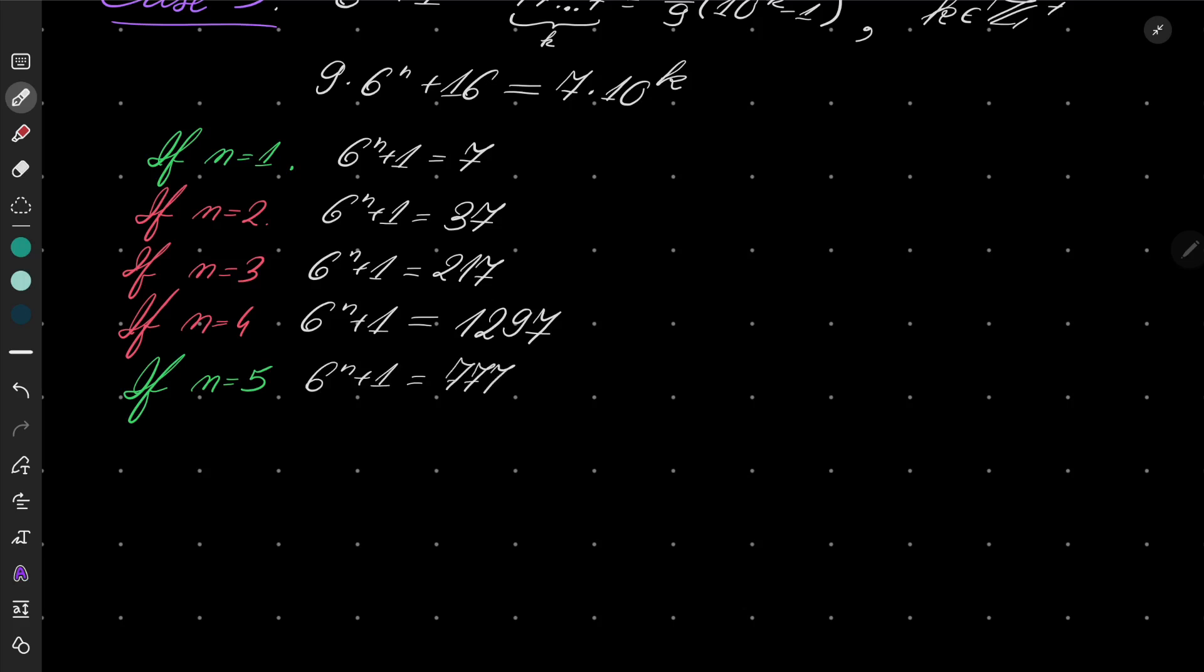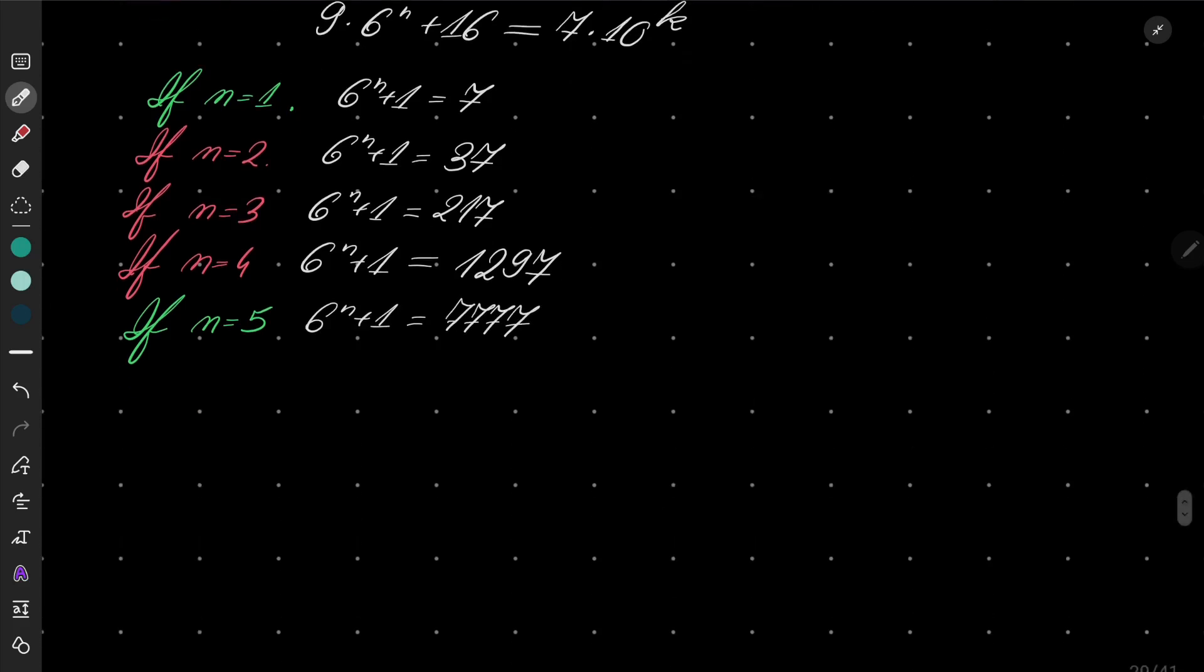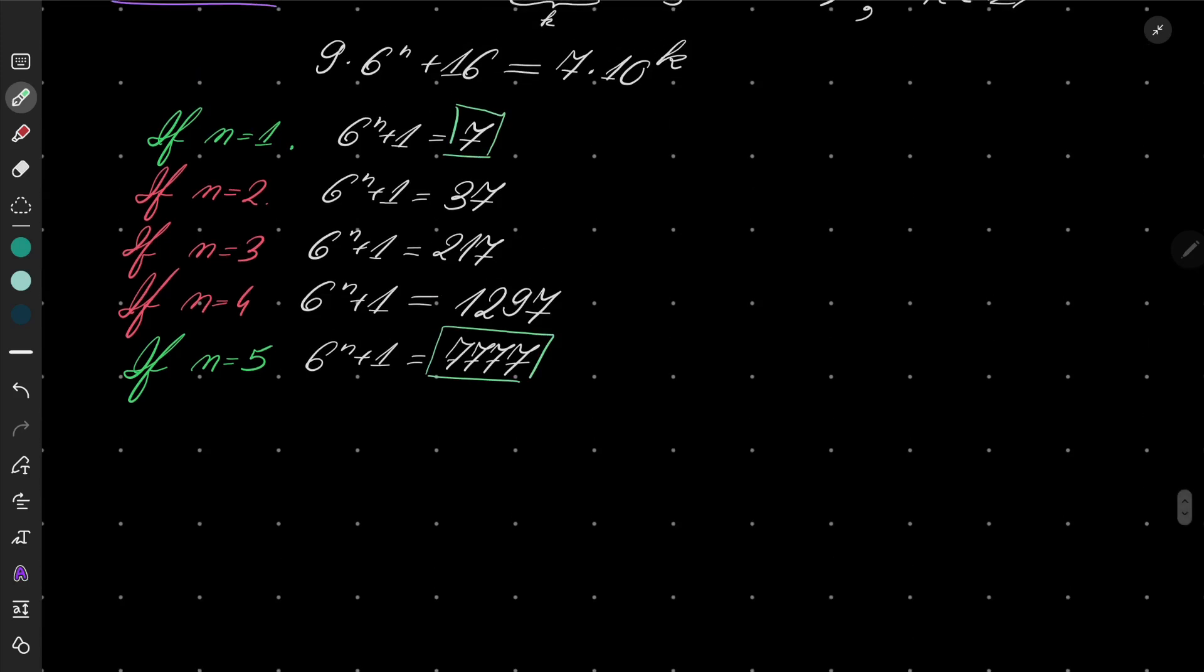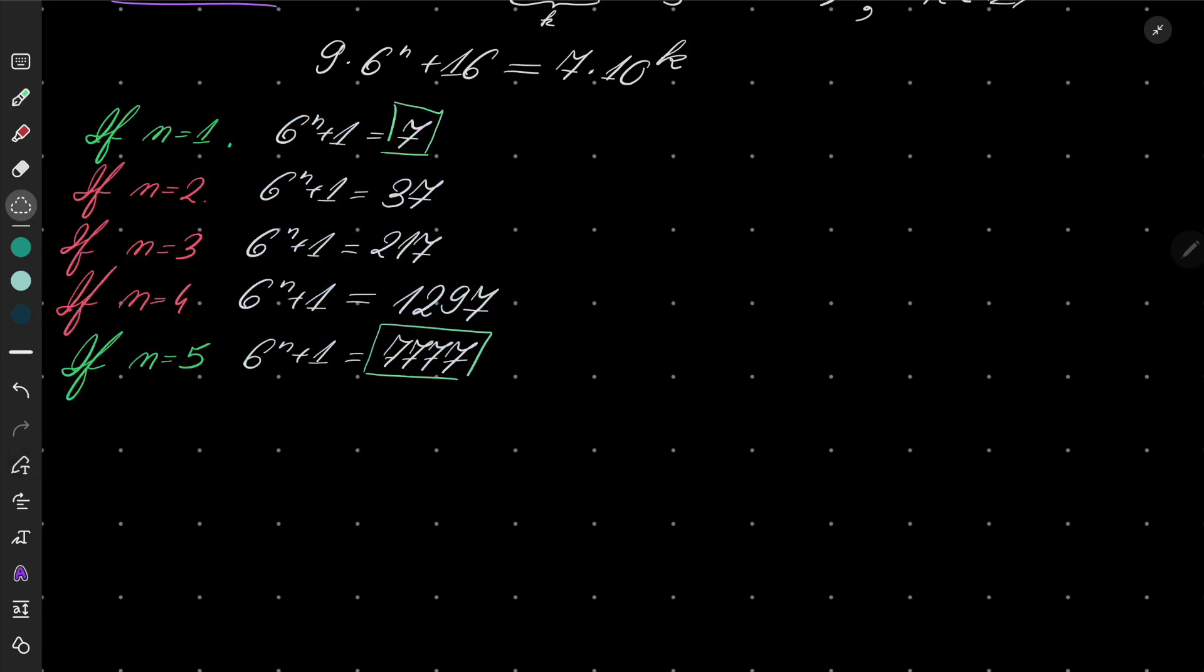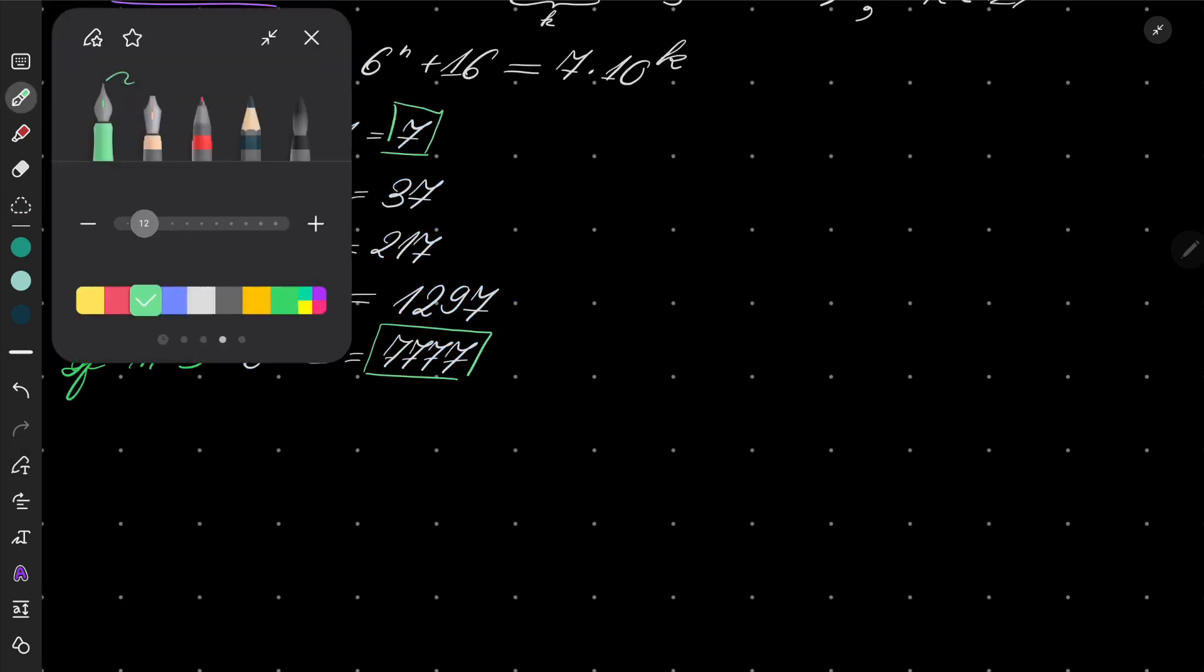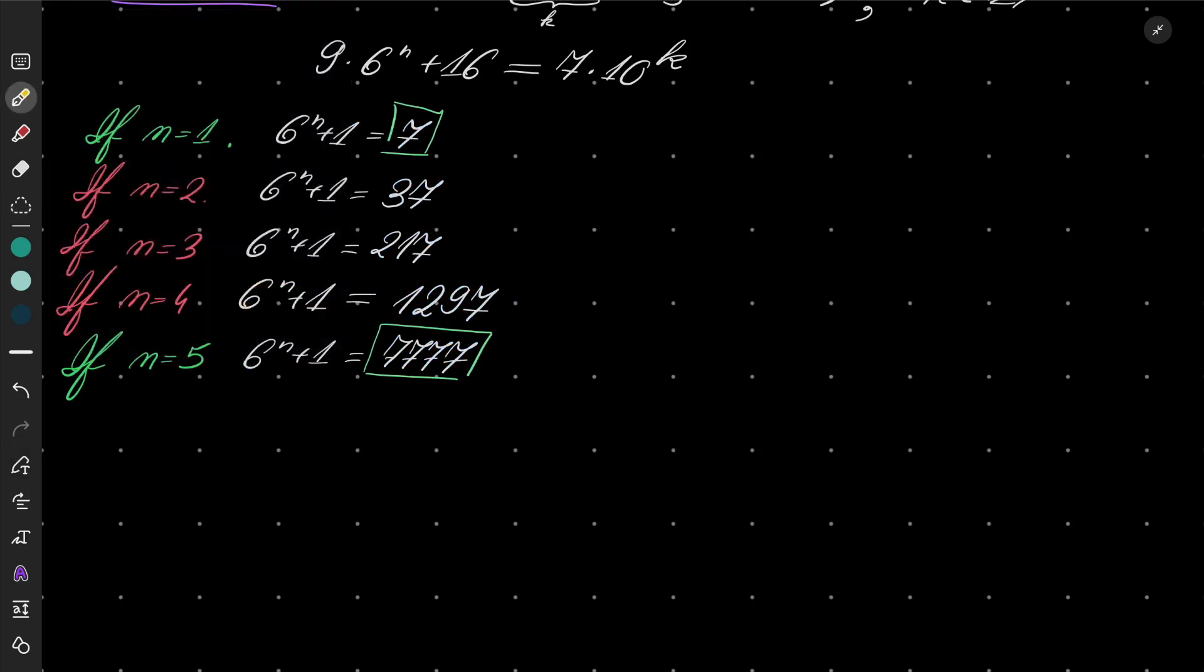So we see that our conditions are met in this case and in case n equals 1. Okay, so that happens for n from 1 to 5. Something more interesting happens for n greater than 5. So let's consider it here. If n is greater than or equal to 6,